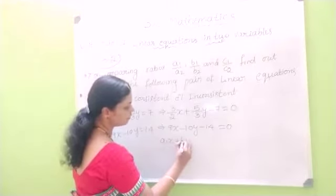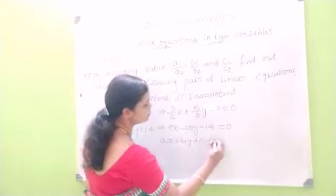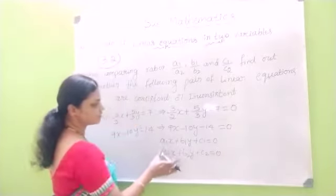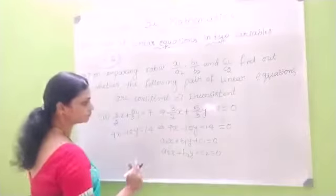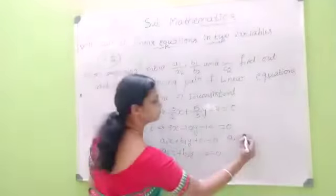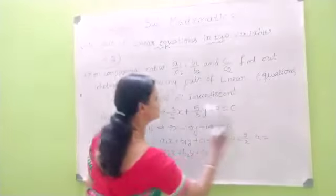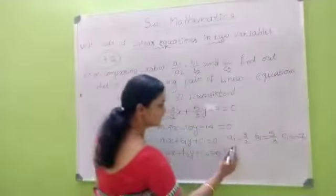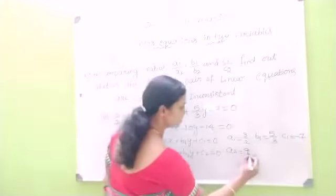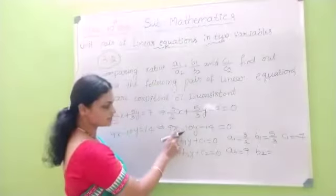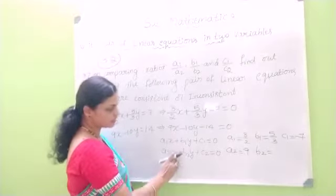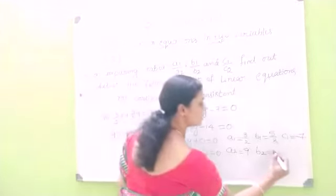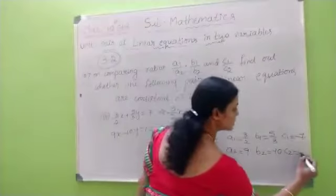The standard form is: a1·x plus b1·y plus c1 equals 0, and a2·x plus b2·y plus c2 equals 0. Comparing with standard form: a1 equals 3/2, b1 equals 5/3, c1 equals minus 7. Then a2 equals 9, b2 equals minus 10, and c2 equals minus 14.